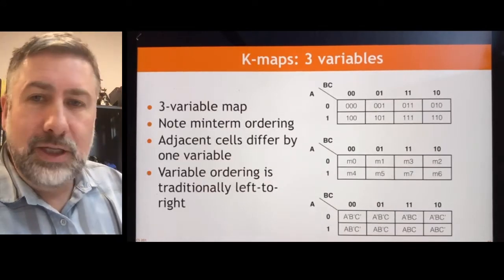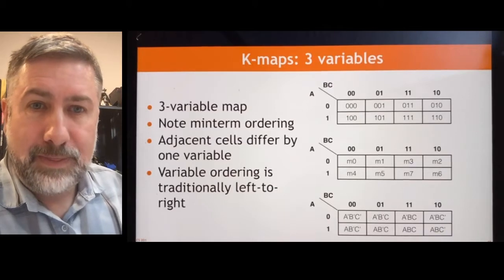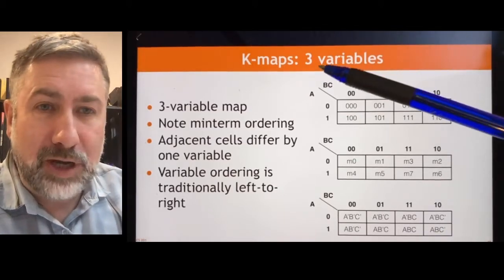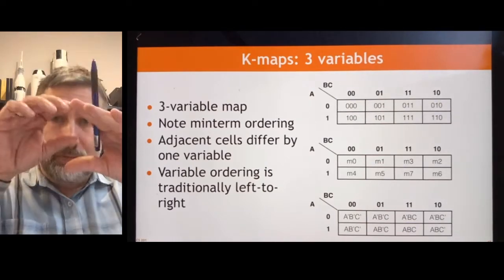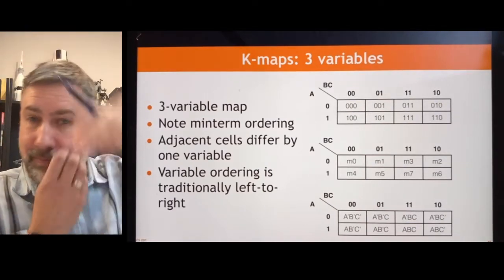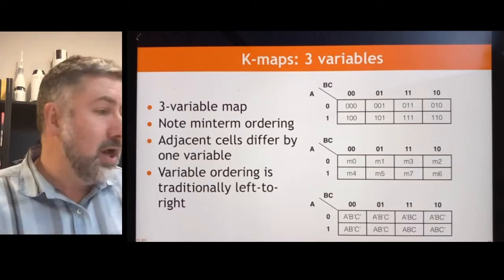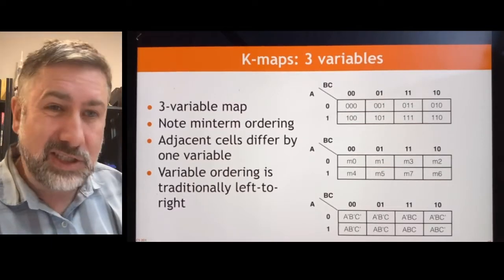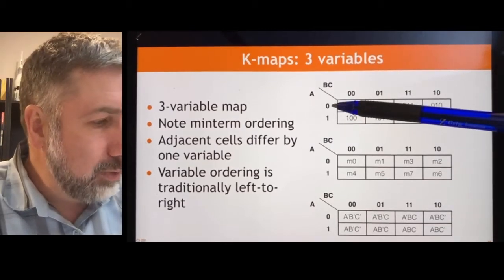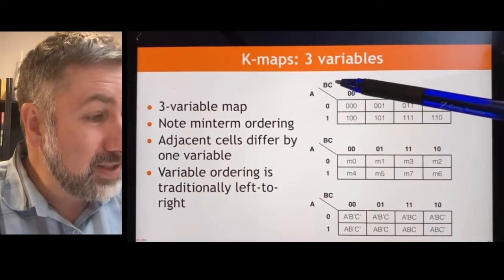Here now is a three-variable map. Now, with the three-variable map, again, we're going to put half of our variables on one side and half on the other side. And you could do the map vertically or horizontally. I'll show you an example of this same map vertical in a second so you can see that it doesn't make any difference.